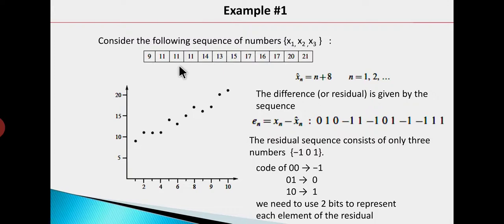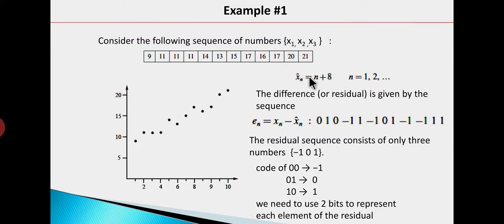Using a formula, we can use the formula instead of storing all the numbers. So in the second part, we encode the residual — the actual data minus the model gives you the residual — and we encode the residual using a binary alphabet.